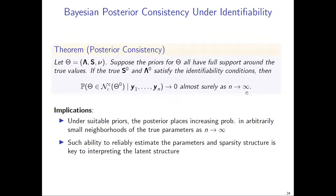A natural consequence of the identifiability result is posterior consistency. As long as identifiability conditions are met and the priors have full support around the true parameter values, our posterior for the parameters and for the constraint matrix will concentrate around the truth — meaning not only our probability tensor will have good estimation accuracy, but our estimation of the parameters lambda will also have good estimation accuracy.